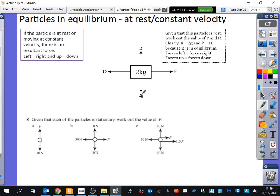We should just be able to go straight in and say that. So I've said here, given that this particle is at rest, work out the value of P and R. Clearly R is equal to 2G and P is equal to 10 because it is in equilibrium.